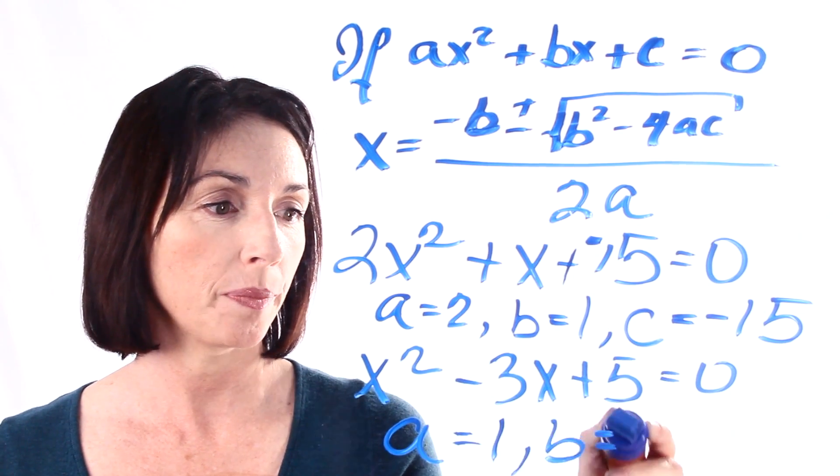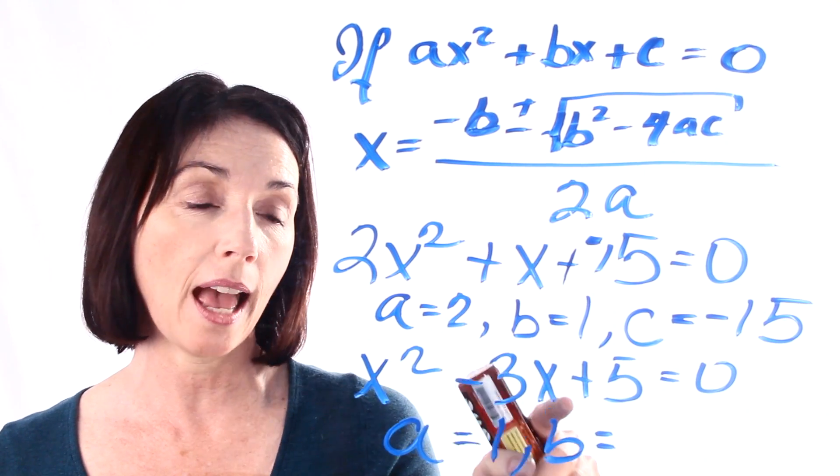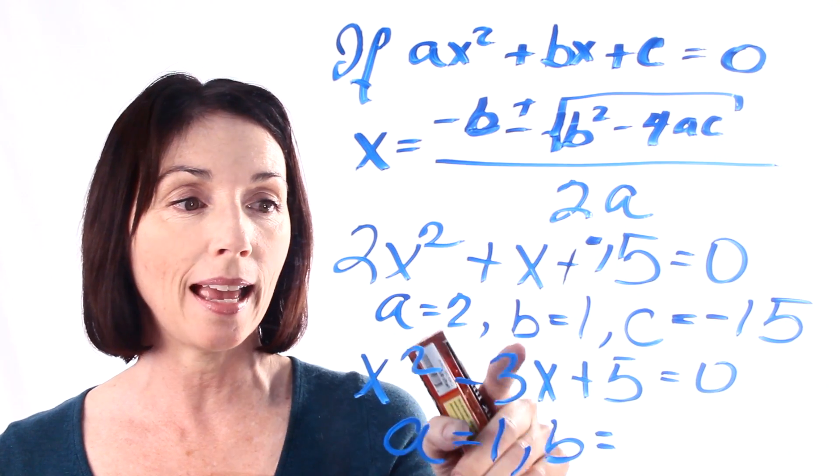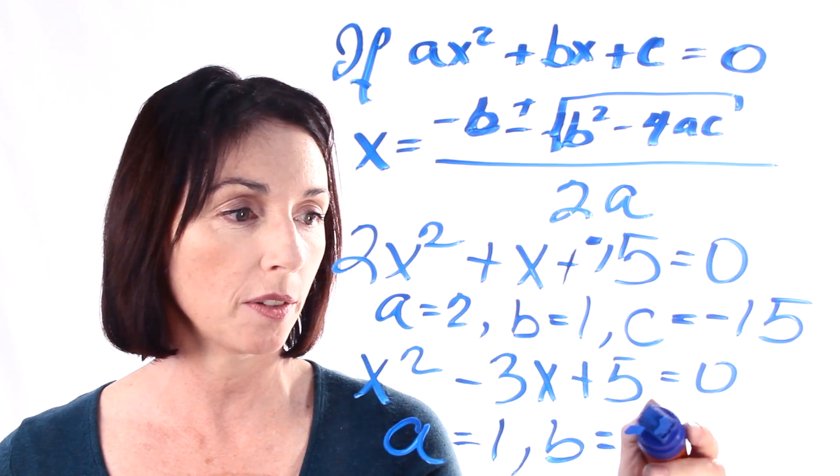What about b? We're subtracting 3x. So, that means we're multiplying x by a minus 3. So, b is equal to minus 3.